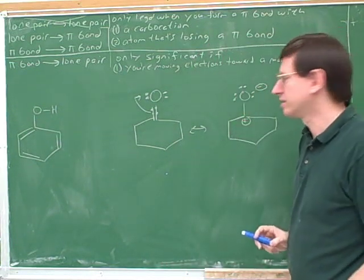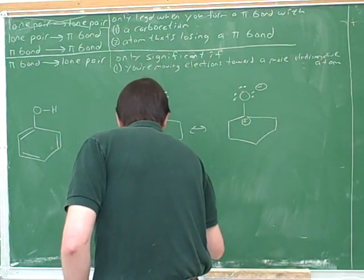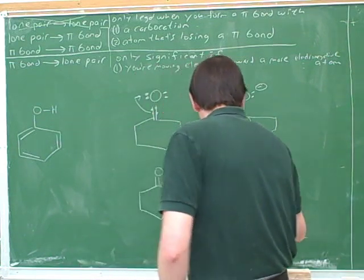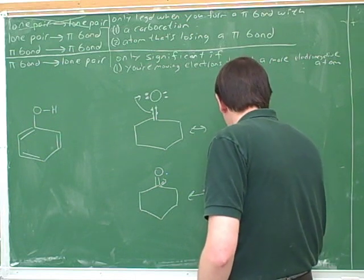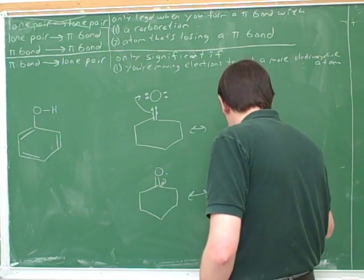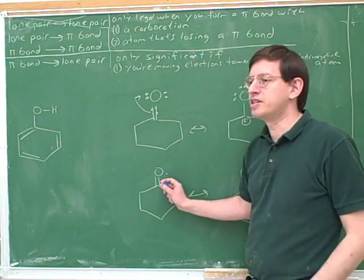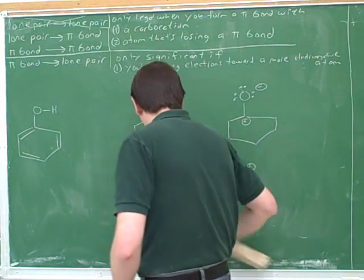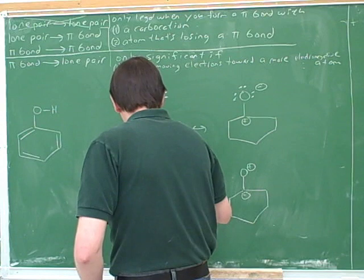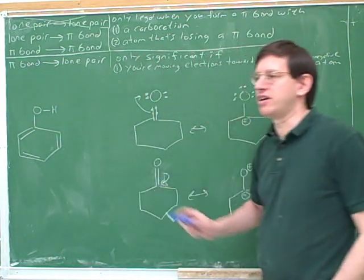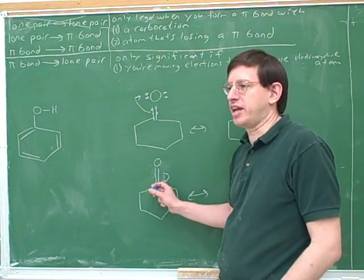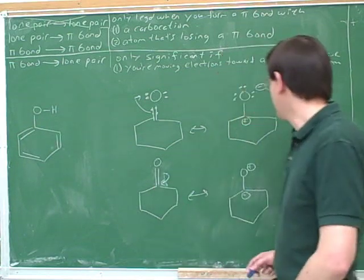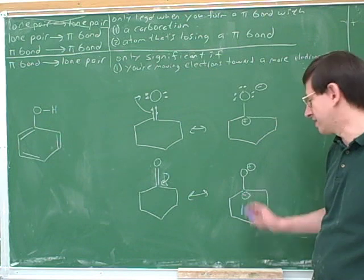Now it gives us a resonant structure that looks like this. How about this — would this be significant? Would this be a significant resonance structure? No, because why would the electrons want to move towards the less electronegative element? So normally we wouldn't even bother drawing this; I'm just drawing it for illustration.